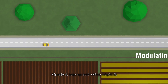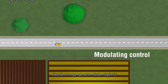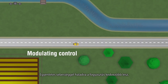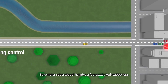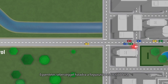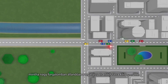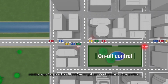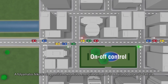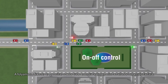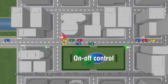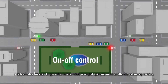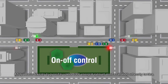Imagine you are driving a car. It runs more efficiently if you only use the necessary amount of fuel to keep a constant speed, but inefficiently when in stop-and-go traffic. Continuous braking and accelerating consumes significantly more energy than maintaining a constant speed.